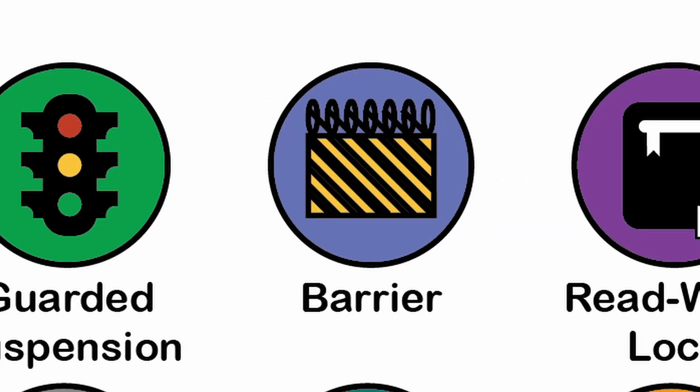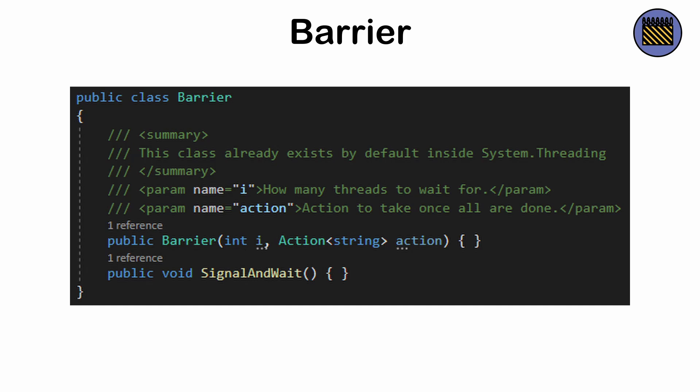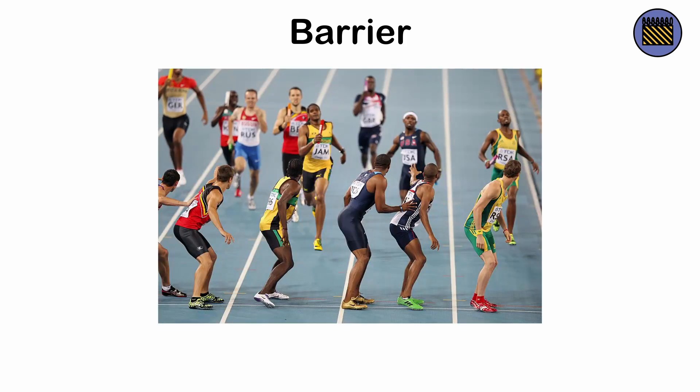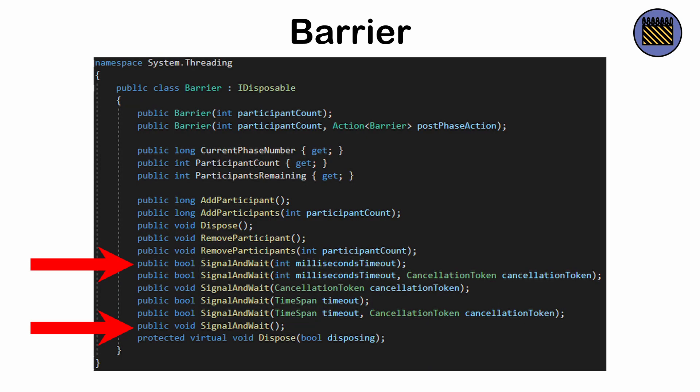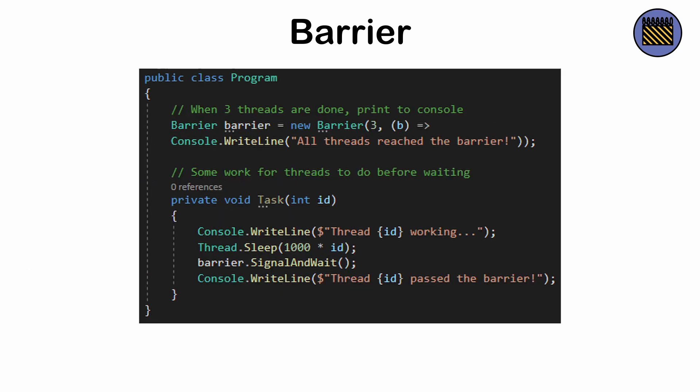The barrier pattern — a way to introduce the concept of synchronization between multiple threads. Imagine a relay race where runners must wait at the next checkpoint for their team members. All threads pause until they've reached a specific point, then proceed together. This is common in parallel computing when different threads need to align their progress.